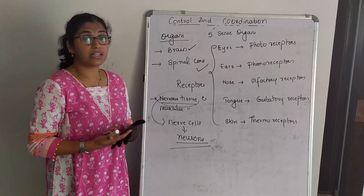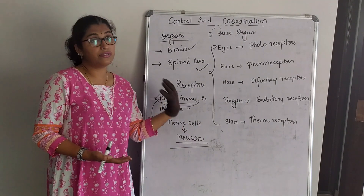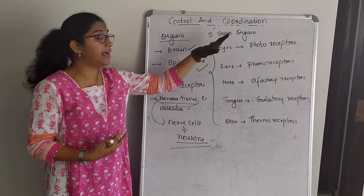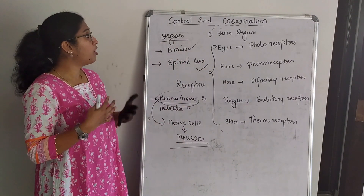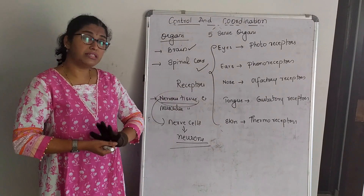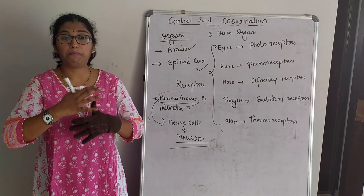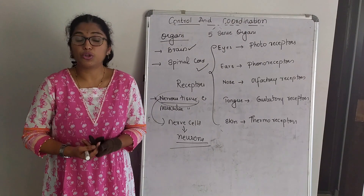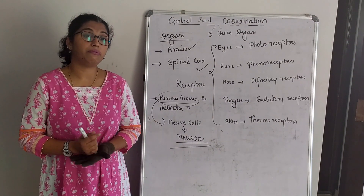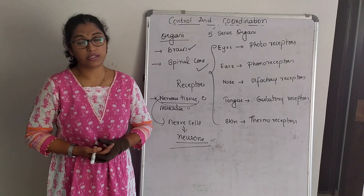In today's class we understood what is control and coordination. Our body is controlled and coordinated by two systems: nervous system and endocrine system. We classified what comes under each, saw the organs involved in the nervous system including the five sense organs acting as receptors. Nervous system is made up of nervous tissues and muscular tissues — nervous tissues are nerve cells known as neurons, the functional unit of the nervous system. Structure and function of a neuron will be covered in the next class.